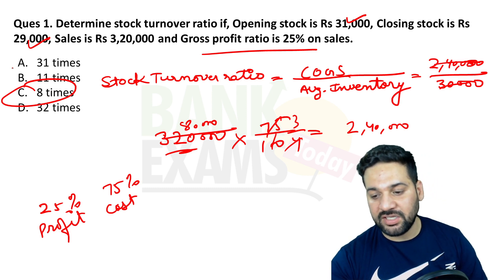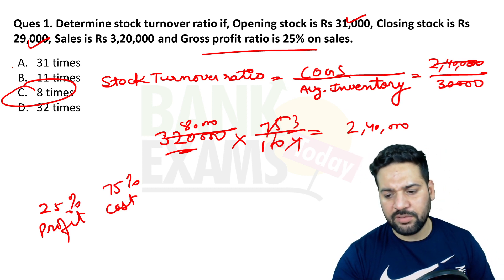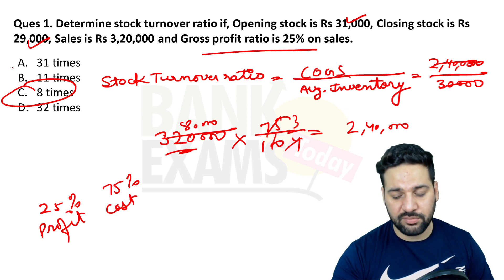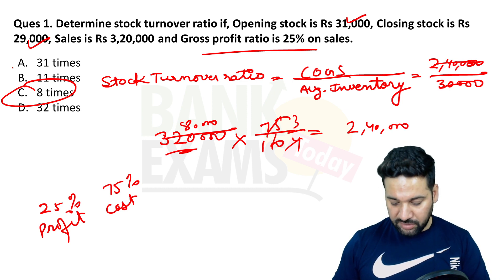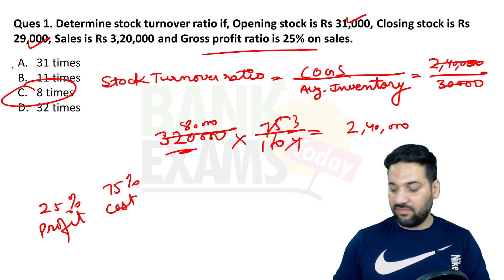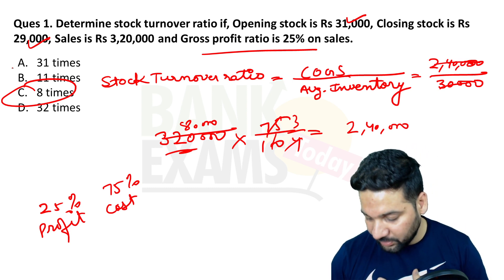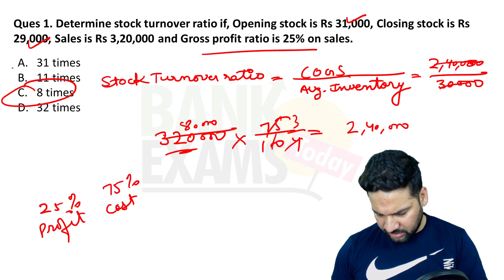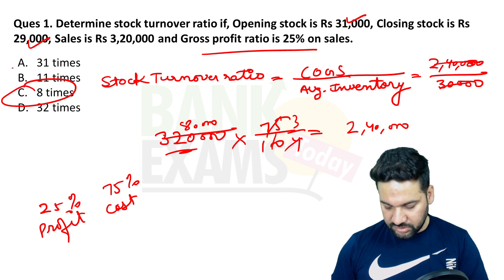Very important question. Cost of goods sold divided by average inventory — please keep that in mind. If there is any doubt, just ask me.